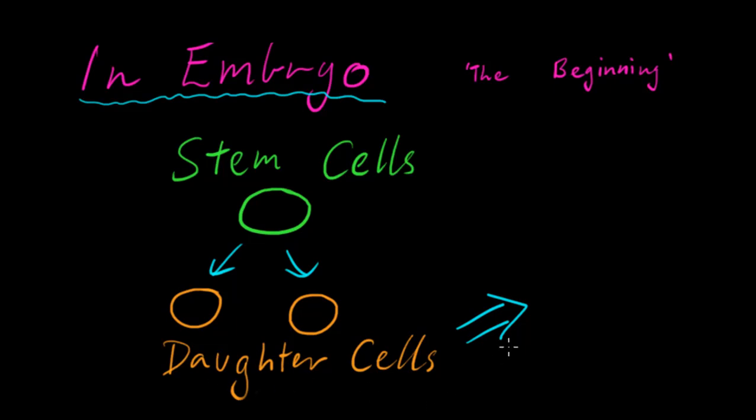These then divide, differentiate, develop and migrate to their final destinations and become neurons or glia.